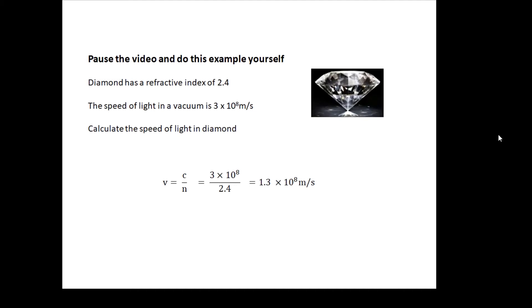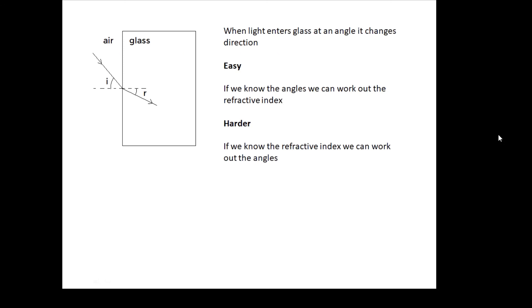Okay, now when light enters glass at an angle—hopefully you recognize this from GCSE—it changes direction. Now an angle to what? Well, an angle to the normal. This dotted line in the middle at right angles is called the normal.